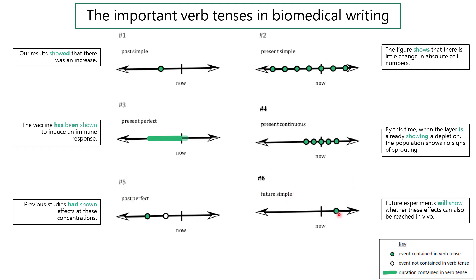The future simple is somewhat easy to understand. 'Future experiments will show whether these effects can also be reached in vivo.' Or in daily life, 'I will probably visit my parents in about two years.' There are two ways to make this — the most common is 'will.' You can also say 'be going to,' but in academic biomedical writing, almost nobody uses 'be going to.' Just don't do it. It doesn't sound good.